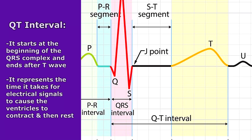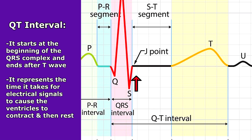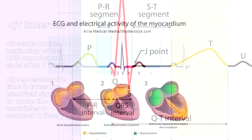Lastly, we have the QT interval. The QT interval starts at the beginning of the QRS complex and ends after the T wave. This demonstrates the time it takes for electrical signals to cause the ventricles to contract and then rest.